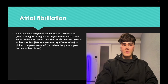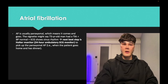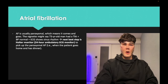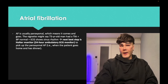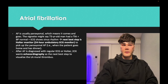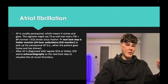AF is usually paroxysmal, meaning it comes and goes. A 77-year-old patient might have had a TIA with normal blood pressure, and the ECG shows sinus rhythm with no abnormalities. He goes home, switches into atrial fibrillation for 30 minutes, then switches out. So if the ECG is normal, you do a 24-hour ambulatory ECG monitor — a Holter monitor — and pick up that paroxysmal AF. Once you diagnose the AF, the next best step is echocardiography to visualize a left atrial mural thrombus.